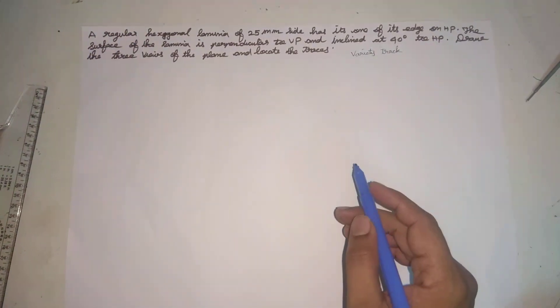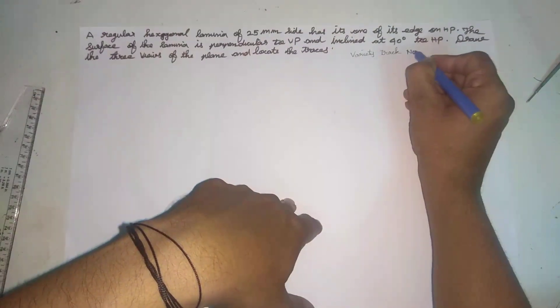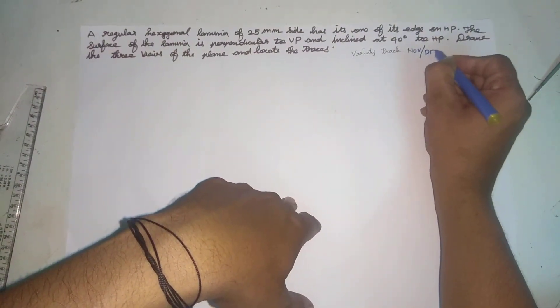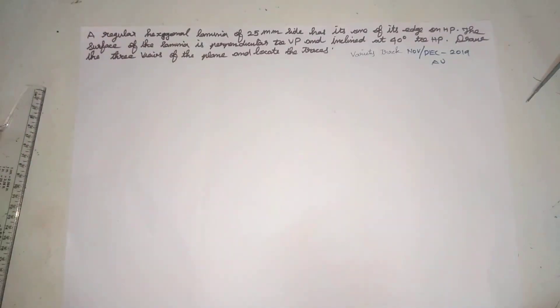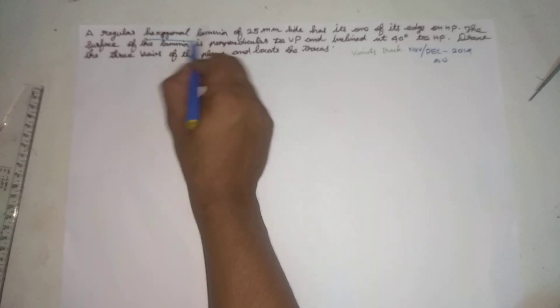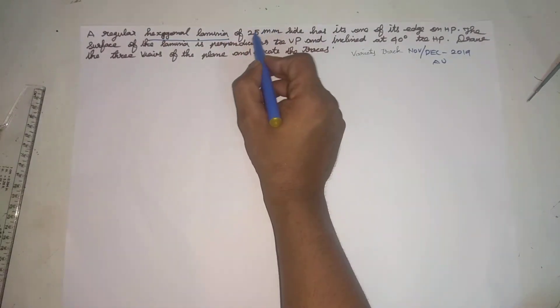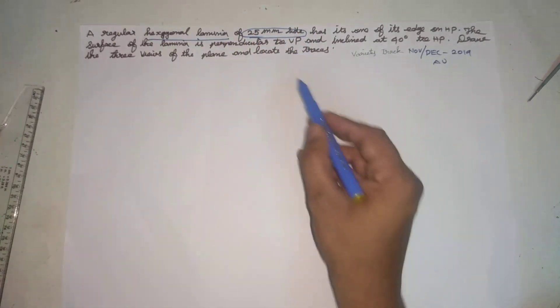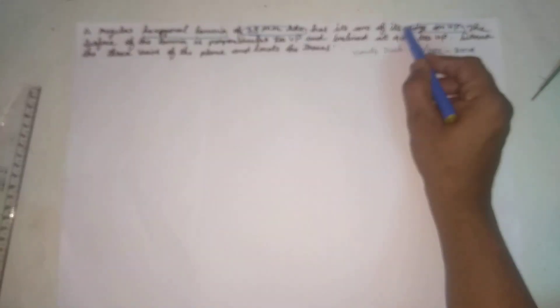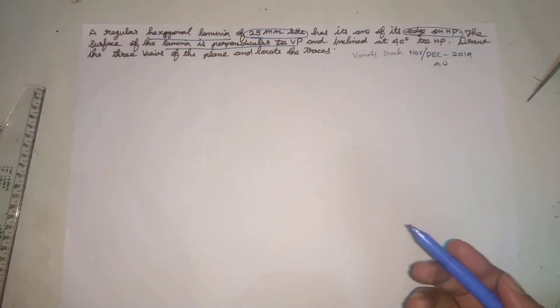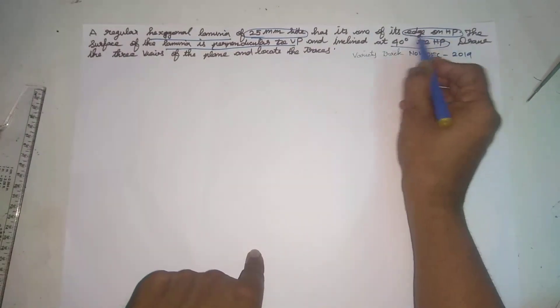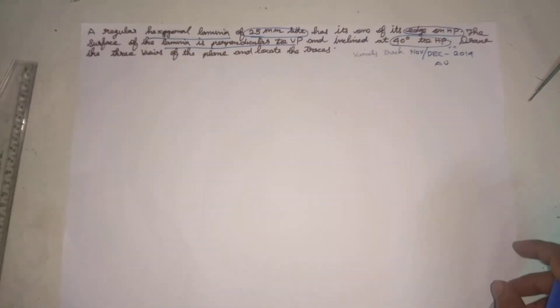This problem is a bit different from November-December 2019. It is a regular hexagonal plate of 25mm side. One of its edges — the surface of the lamina is perpendicular to the VP, that is the surface of the VP. It is inclined 40 degrees to the HP. Draw the three views of the plane and locate the traces.